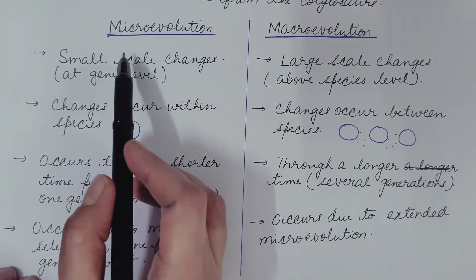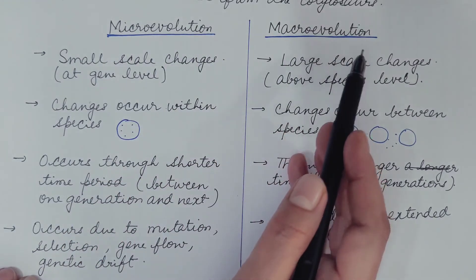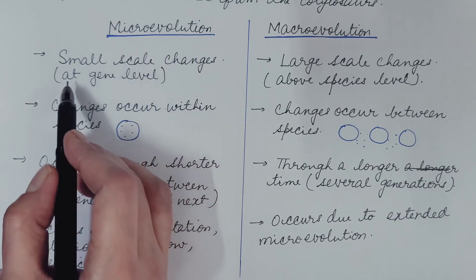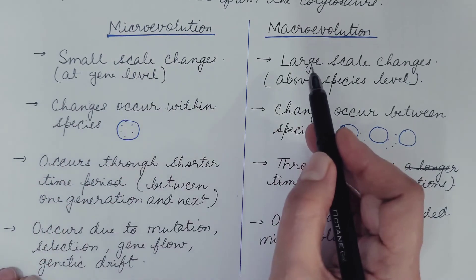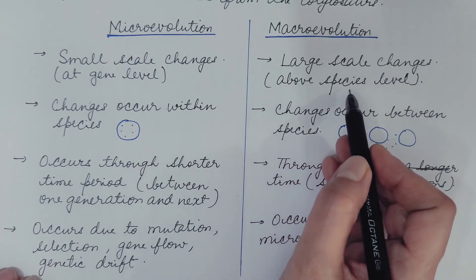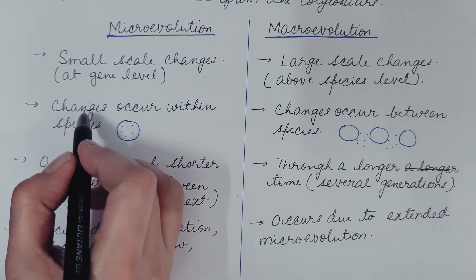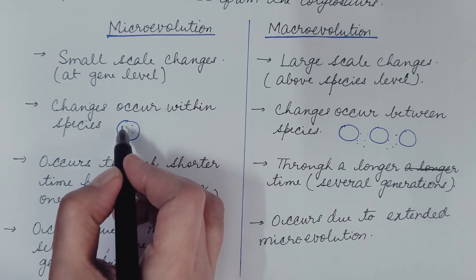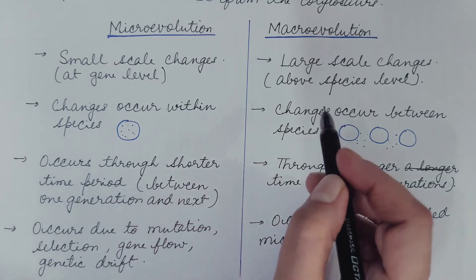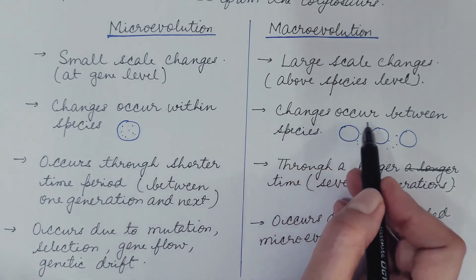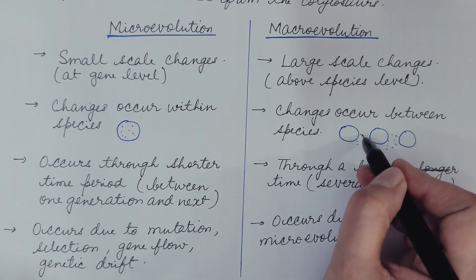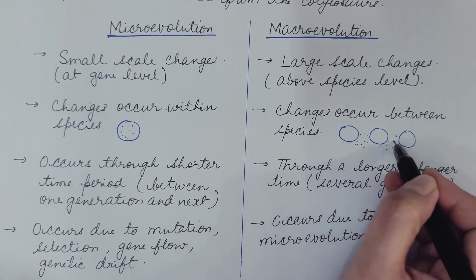Now let us compare microevolution and macroevolution. Microevolution is small scale changes which occurs at gene level. Macroevolution is large scale changes above species level. In microevolution, changes occur within the species. Suppose this is a species. Then the changes occur within the species. In macroevolution, changes occur between species. Suppose these are three species. So the changes occur between the species.